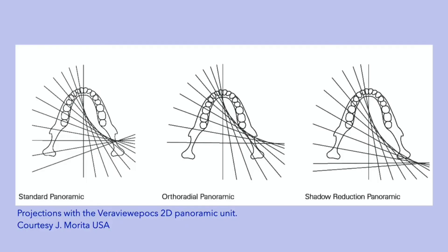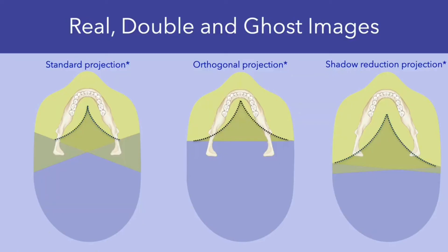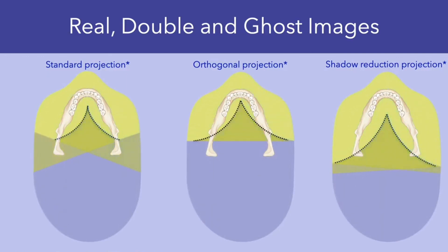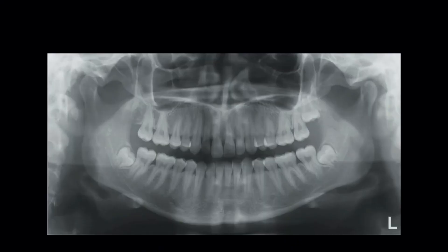Modern panoramic machines provide options for different panoramic projections. Modifications to the standard projections are created by changing the path of the rotation center. As a consequence, the zones where real, double, and ghost images are produced will also vary. Be aware of this when interpreting panoramic radiographs made with non-standard projections. These non-standard projections are of value in specific situations. The orthogonal projection, for example, allows us to visualize the teeth with less horizontal overlap. And with the changing zones in the shadow reduction projection, there is less superimposition of structures over the jaw. When interpreting a panoramic radiograph, it is important that you be familiar with the principles of image layer formation and the formation of real, double, and ghost images.